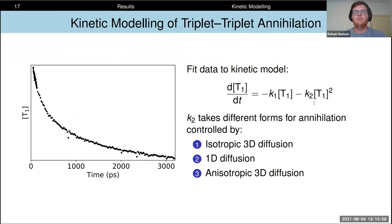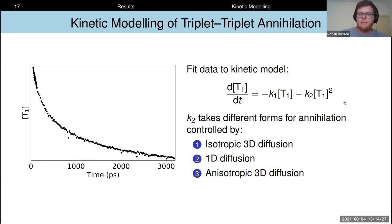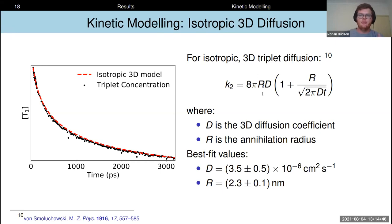From this data we can extract triplet concentrations as a function of time and fit a kinetic model that considers both the first-order natural triplet decay and a bimolecular second-order decay term corresponding to triplet-triplet annihilation. This is where we can start to get information about how triplet excitons are moving and diffusing within this crystalline material, because this bimolecular rate coefficient k₂ takes on different mathematical forms depending upon the type of excitonic motion that annihilation is limited by. We will consider three different models: isotropic three-dimensional exciton diffusion, one-dimensional triplet exciton diffusion, and anisotropic three-dimensional exciton diffusion.